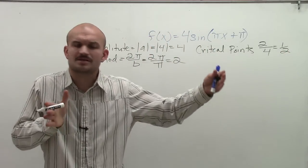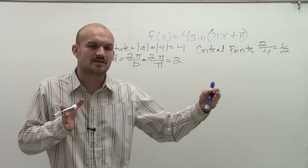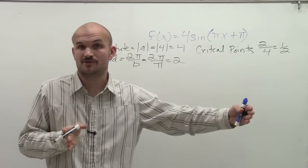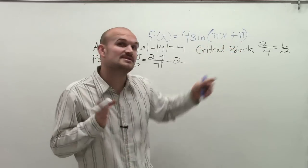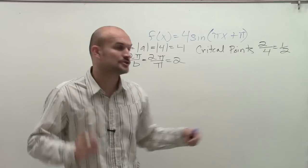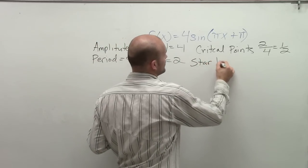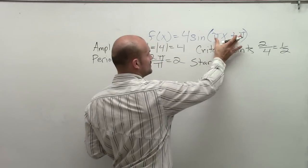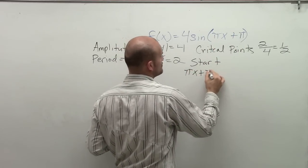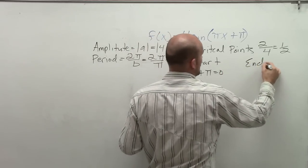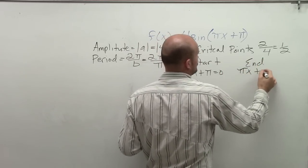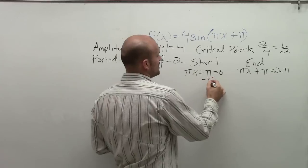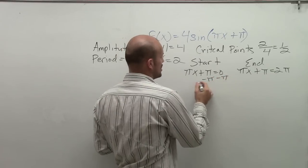We're going to start by graphing one period. On the parent graph we always start when x equals 0, and the parent graph had a period of 2 pi. However, when we have transformations, that's going to affect the start and beginning of our initial period. So I want to find a new starting and ending point. I take what's inside the function: pi x plus pi equals 0 for the start, and pi x plus pi equals 2 pi for the end of the first period. Then we solve for x in both instances.